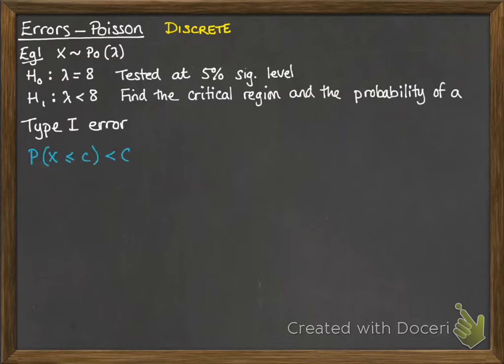First of all we need to find the critical region which means some value of c which gives us the probability that x is less than or equal to c as being less than the 5% significance level. We're looking at x being less than or equal to c since our alternative hypothesis is that lambda is less than the mean that was stated.